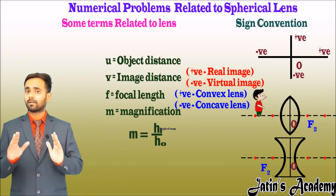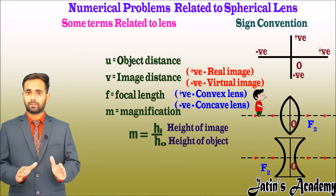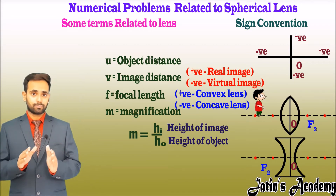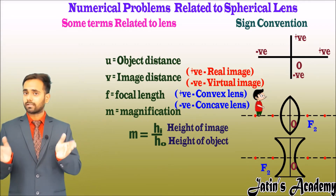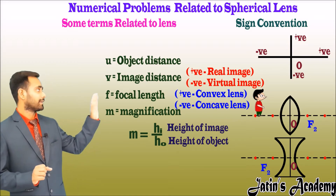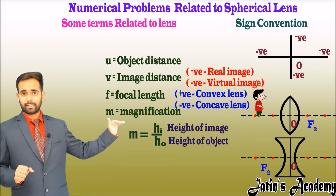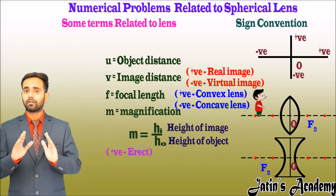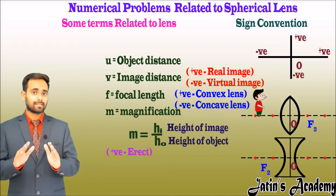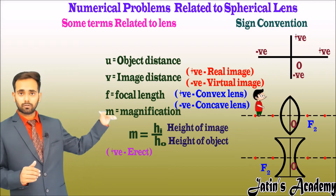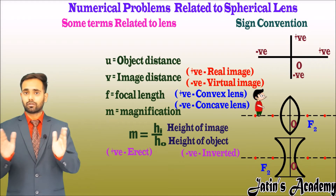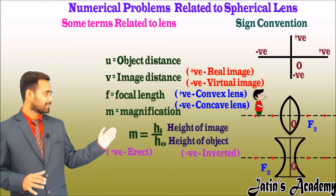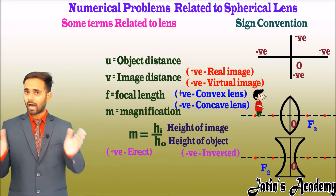For h_naught (height of object) and h_i (height of image): h_naught is always positive because the object is placed above the principal axis. h_i can be positive or negative — if h_i is positive, the image is erect; if h_i is negative, the image is formed below the principal axis and is inverted.